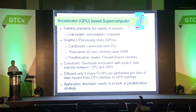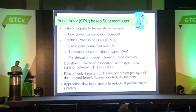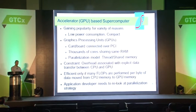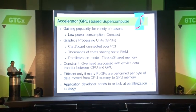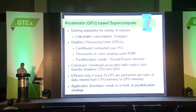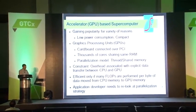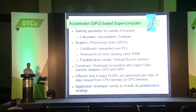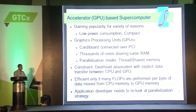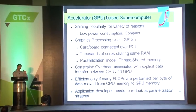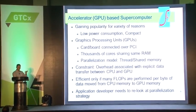Over the last year or couple of years, accelerator-based supercomputing in CFD has been gaining popularity. This is because of lower power consumption — they are also compact. One of these accelerators is, of course, the graphical processing units — GPUs by NVIDIA — which come on a card or board connected to a node over PCI Express. They have thousands of cores sharing the same RAM. But in terms of hardware architecture, they are different from traditional Xeon CPUs, so the parallelization model has to be slightly different, based on threads or shared memory.